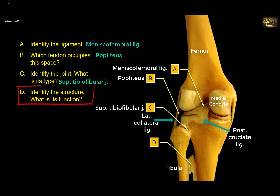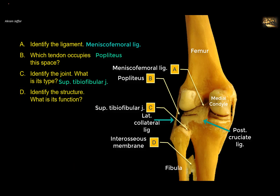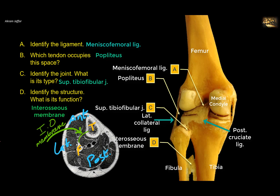Identify structure D. What is its function? D is the interosseous membrane that connects the tibia and fibula and constitutes another fibrous joint between the tibia and fibula. The function of this ligament is that it connects the tibia and fibula, provides for muscle attachment, separates the anterior and posterior compartments of the leg, and provides attachment for some muscles of the anterior compartment and the deep muscles of the posterior compartment.